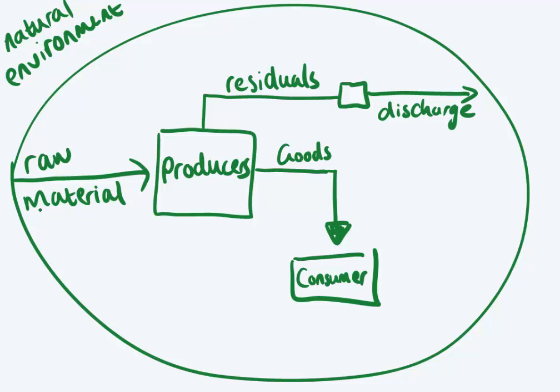First, we can just discard the residuals back into the environment. So everything that came in — a part of it goes back to the environment as waste or as a byproduct. Or we can recycle some of it and use it again in production.